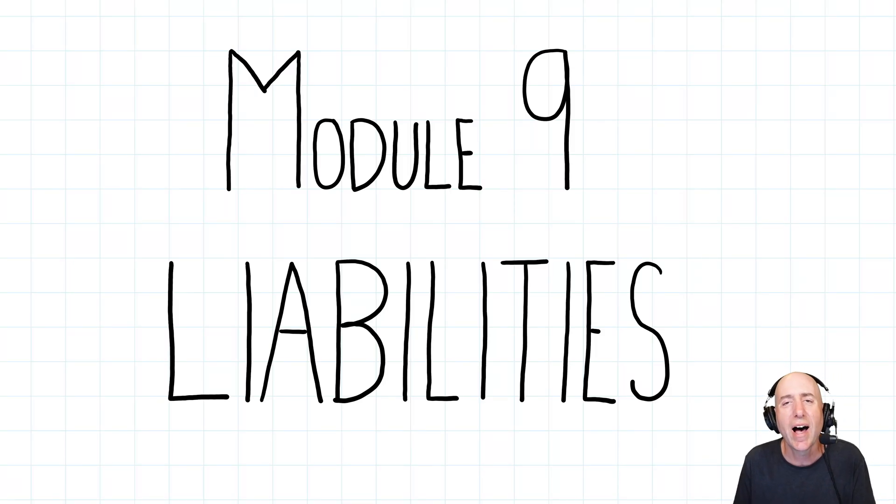Let's take a look at module nine, all about liabilities - what we owe, what we need to be paying back. We've already been introduced to simple notes payable in our class. This chapter introduces some more complex liabilities, and students find this to be a very challenging chapter.